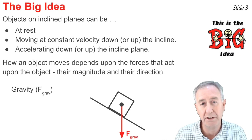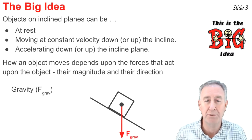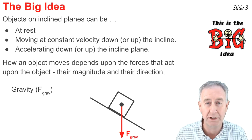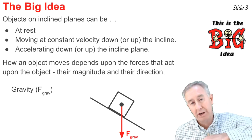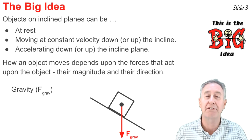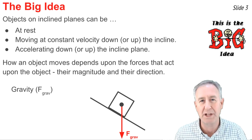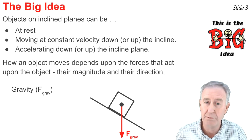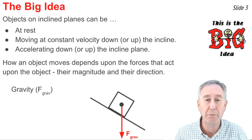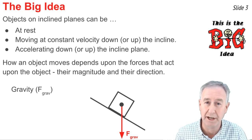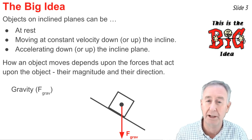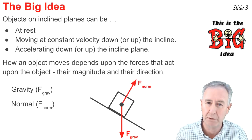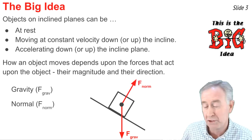The first force we'll discuss is the force of gravity, which acts upon all objects — on inclined planes or not — and always in the downward direction. Tilting the surface upward at an angle doesn't affect the direction of the force of gravity; it's always down. When you place an object on this surface, the surface and the object interact with one another. They press against each other, and the result is a normal force that acts perpendicular to the inclined plane, in the direction as shown.